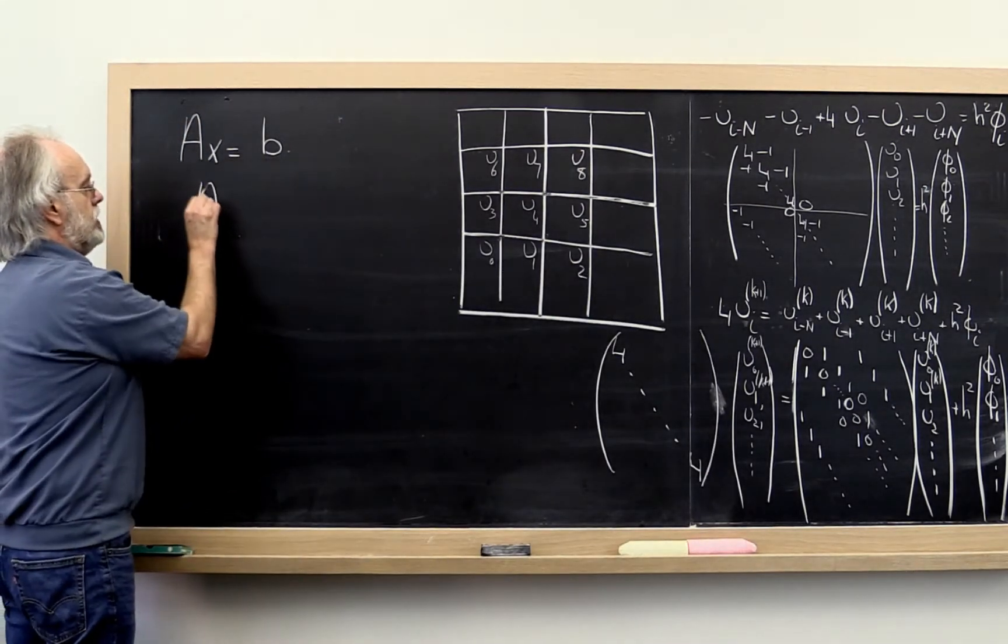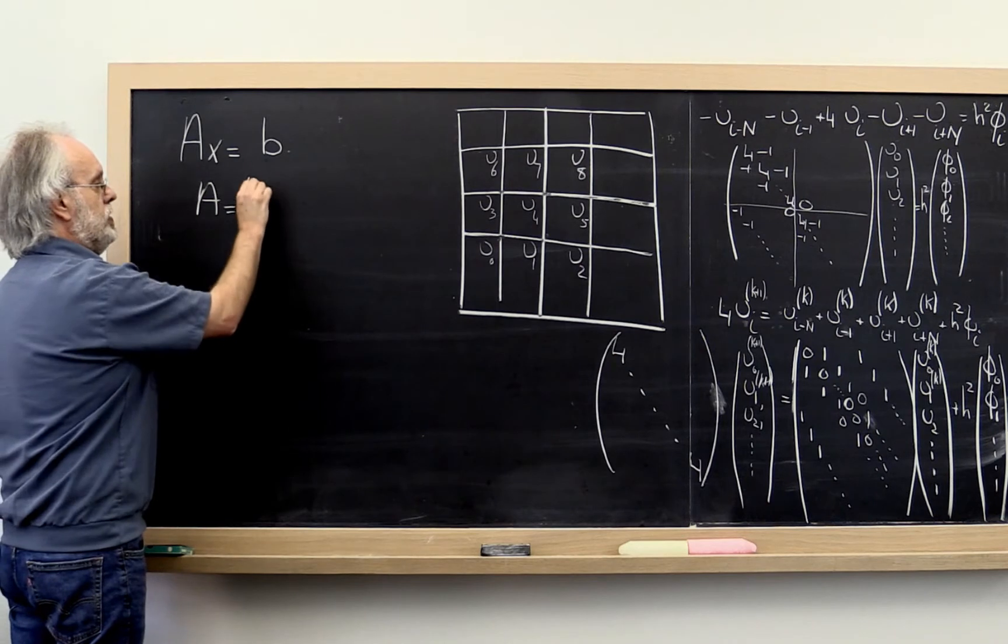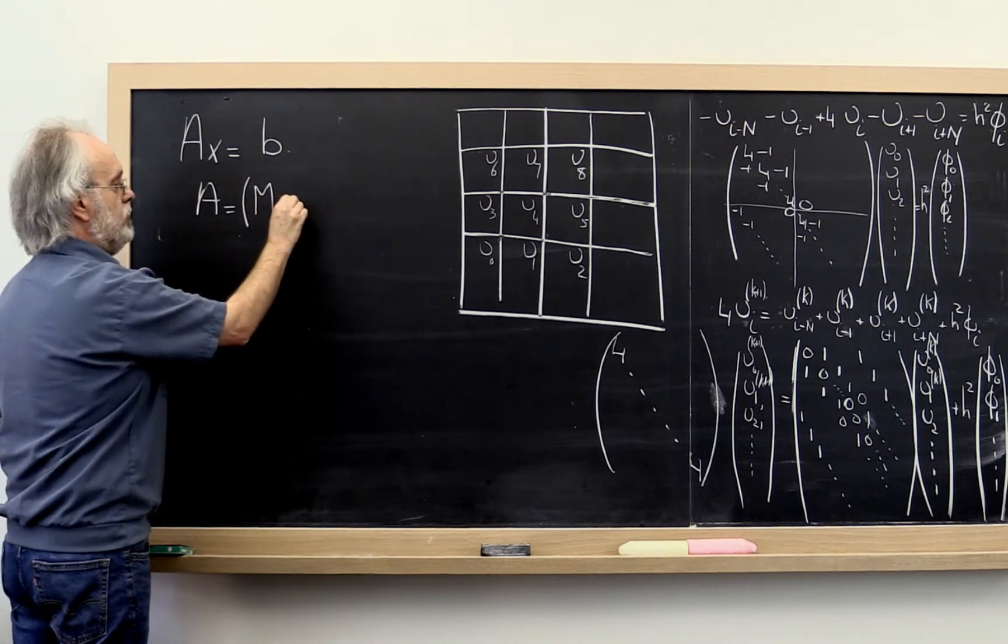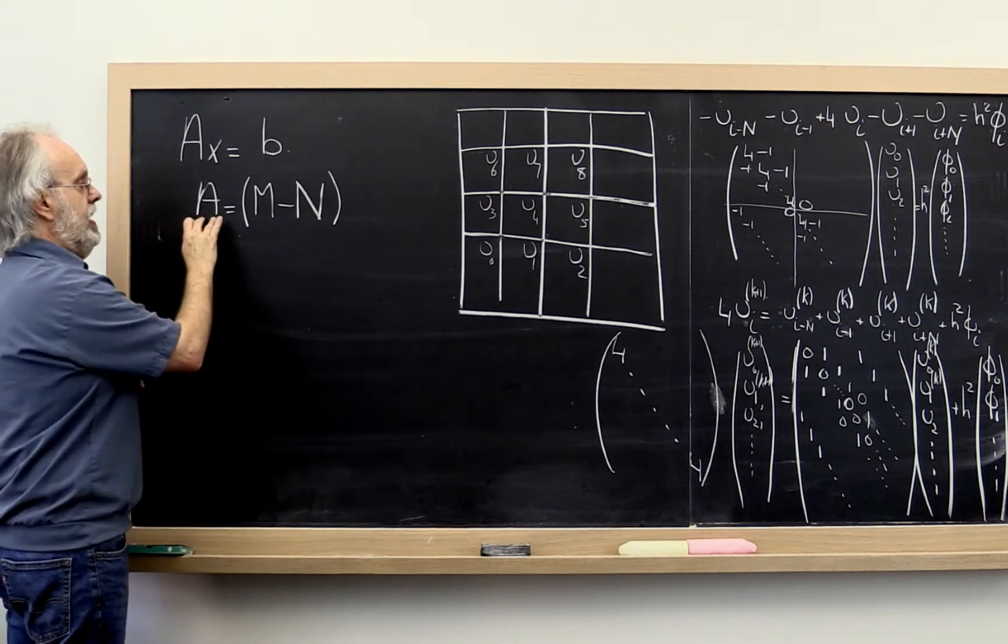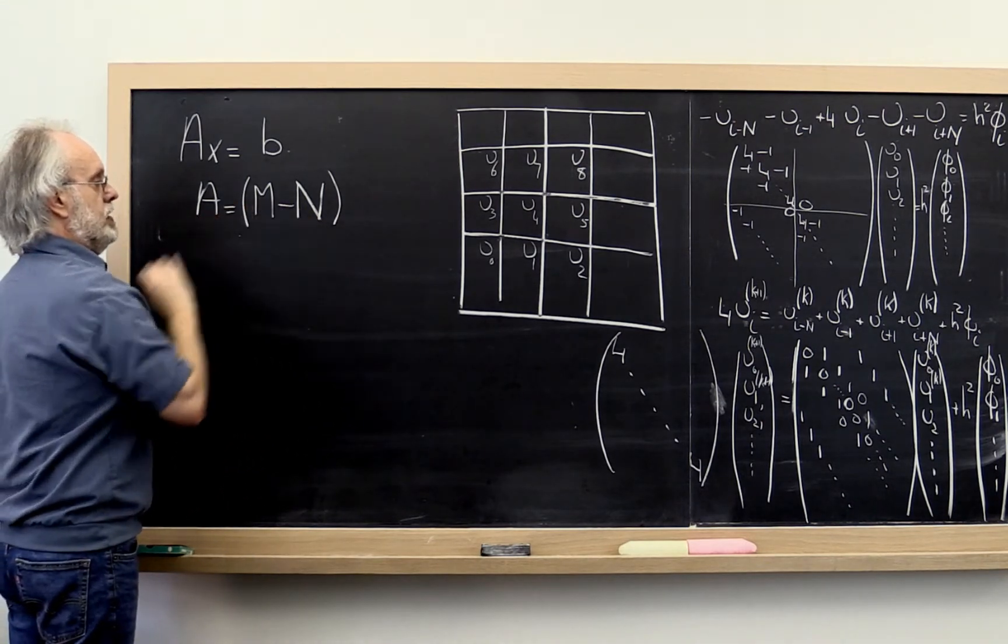Well, what if we take our matrix A and we partition it, we split it into a matrix M and a matrix N. And we say A is equal to M minus N.